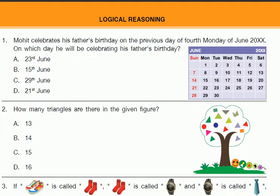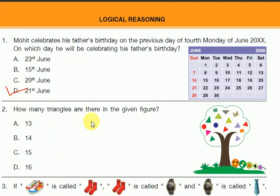Question number 1 — Logical Reasoning: Mohit celebrated his father's birthday on the previous day of the fourth Monday in June. You can see that the fourth Monday falls on the 22nd, so the previous day would be the birthday. The answer is 21st June.